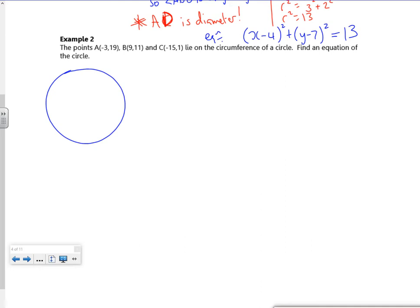So if C is minus 15, 1. I actually, I can't actually, I think I'll just make a botch and get an approximation in my little diagram.